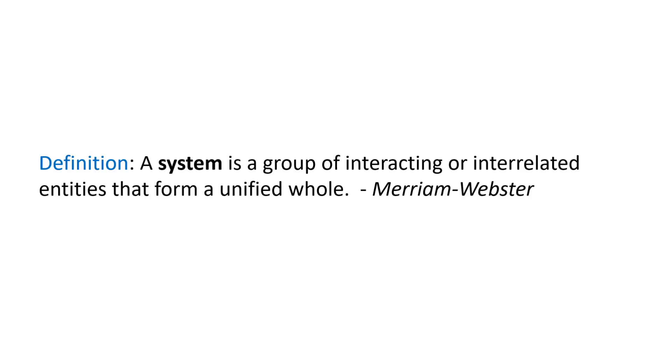We can begin with this definition from the Merriam-Webster Dictionary of a system. Here we have a system is a group of interacting or interrelated entities that form a unified whole. Start by saying that it emphasizes that a system is a group of entities. And here, a group, we don't really say in a lot of detail, but we're sort of implying more than one here. A system that has only one entity or maybe even zero entities is a kind of degenerate system, or maybe is not a system at all.